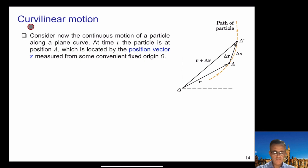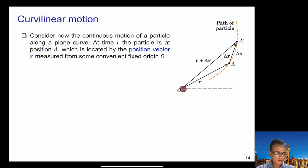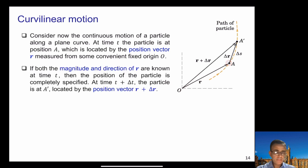We will now discuss curvilinear motion. Consider the continuous motion of a particle along a plane curve, as shown in this figure. At time t, the particle is at position A, and the position of A is specified by the position vector r, measured from a convenient fixed origin O. If the magnitude and direction of r are known at time t, then the position of the particle is completely specified.